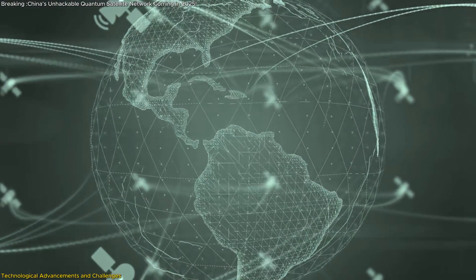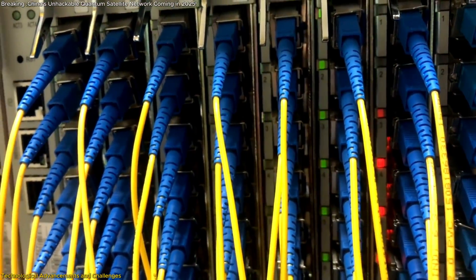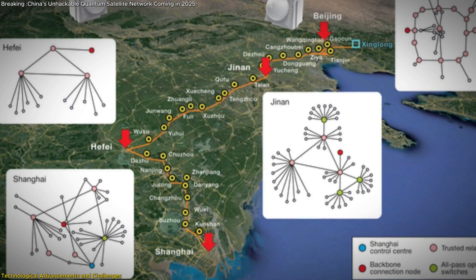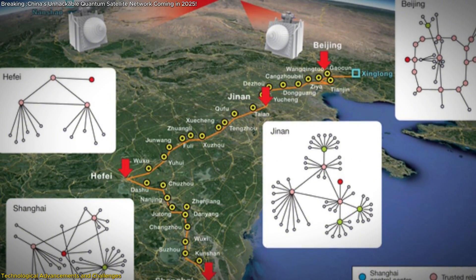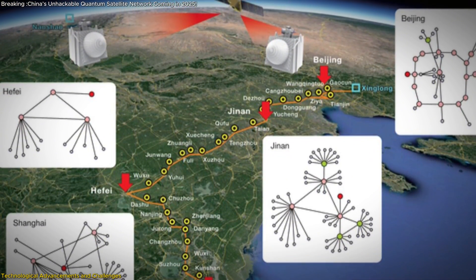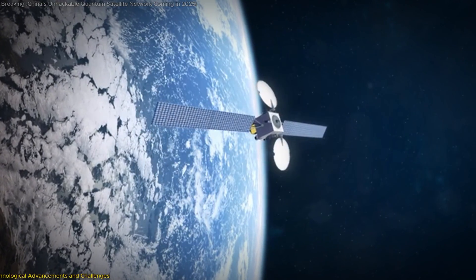Another technological hurdle is integrating the space-based network with existing fiber-optic infrastructures. Although ground-based networks, like the Beijing-Shanghai Quantum Communication Backbone, have demonstrated the viability of quantum communication over regional distances, connecting these to satellites adds layers of complexity.